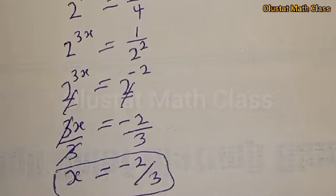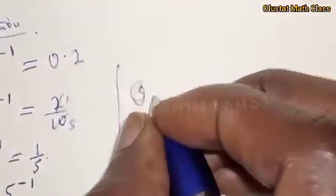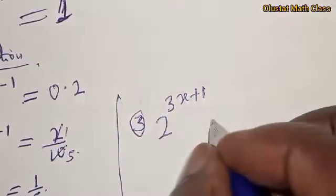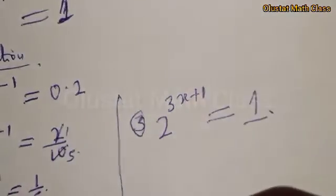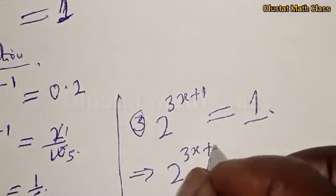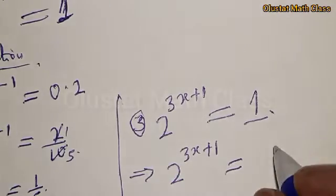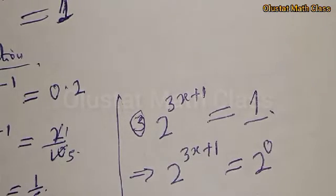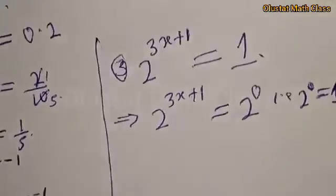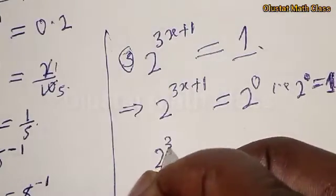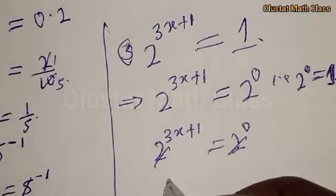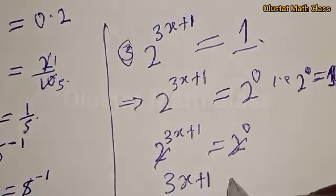Let's quickly solve question number 3. We have 2 raised to power 3x plus 1 equal to 1. Now, 1 is the same thing as 2 raised to power 0, because any number raised to power 0 is 1. That is, 2 raised to power 0 equals 1. Therefore, our equation becomes 2 raised to power 3x plus 1 equal to 2 raised to power 0. Since they have the same base, we have 3x plus 1 equal to 0.